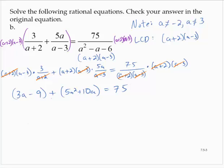Simplifying the left-hand side by combining like terms gives us 5a squared plus 13a minus 9 is equal to 75. So now this is a polynomial equation, a quadratic equation to be specific. So I'm going to subtract 75 from both sides. 5a squared plus 13a minus 84 is equal to 0.